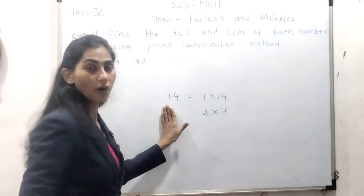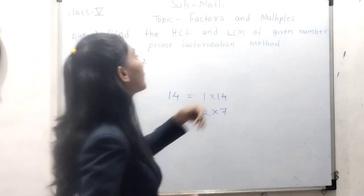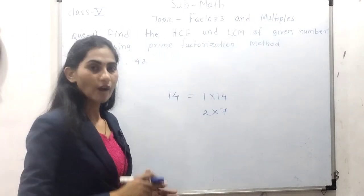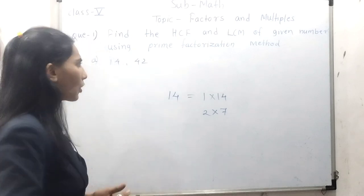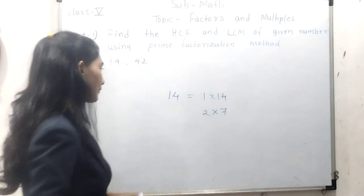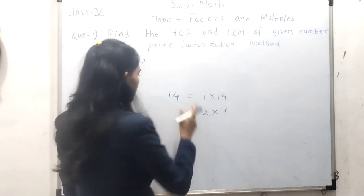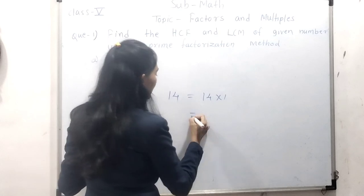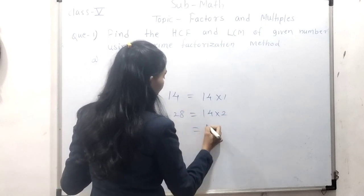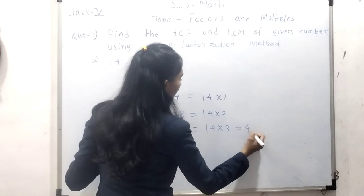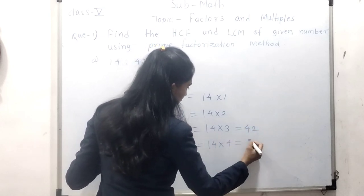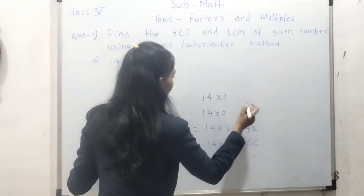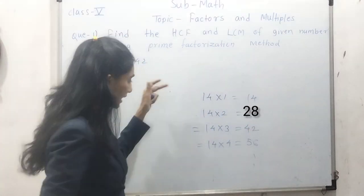Now let us talk about multiples. Multiples are the numbers we get when we multiply the given number by 1, 2, 3, and so on. For example, for 14: 14 × 1 = 14, 14 × 2 = 28, 14 × 3 = 42, 14 × 4 = 56, and so on. These are the multiples of 14.